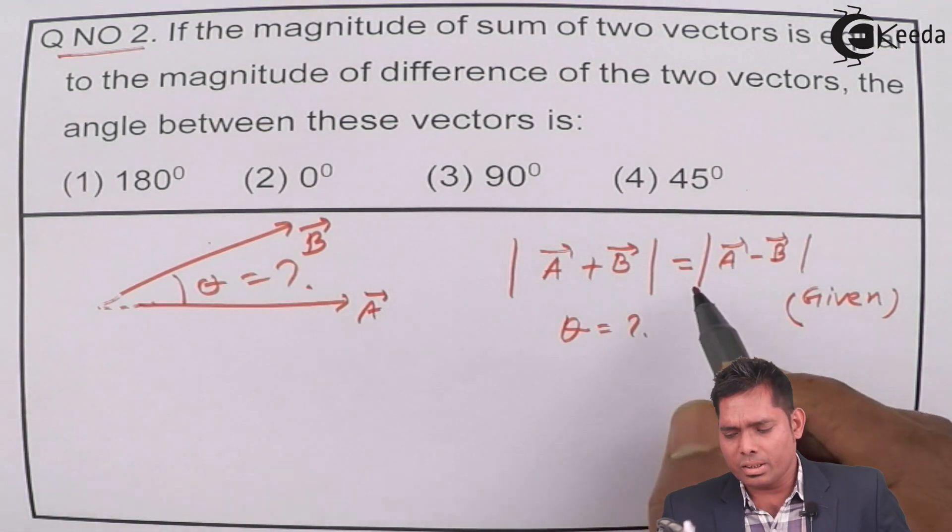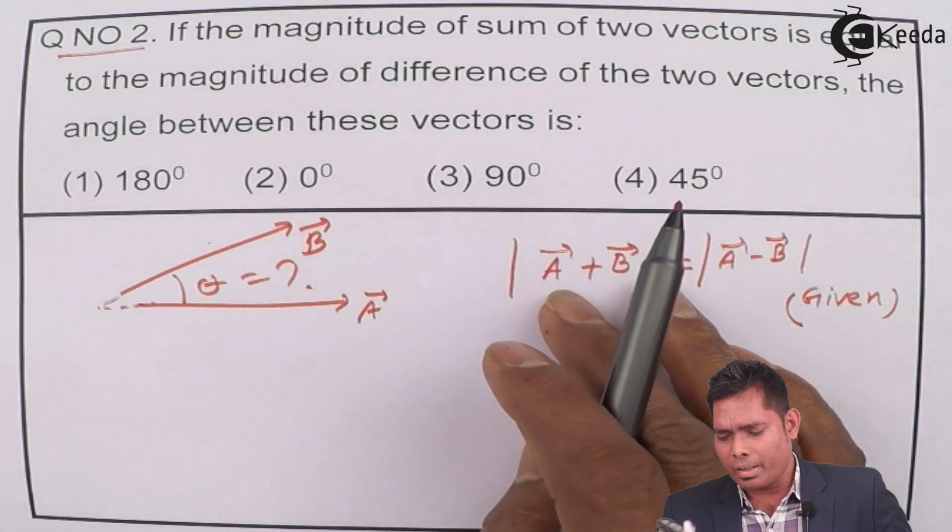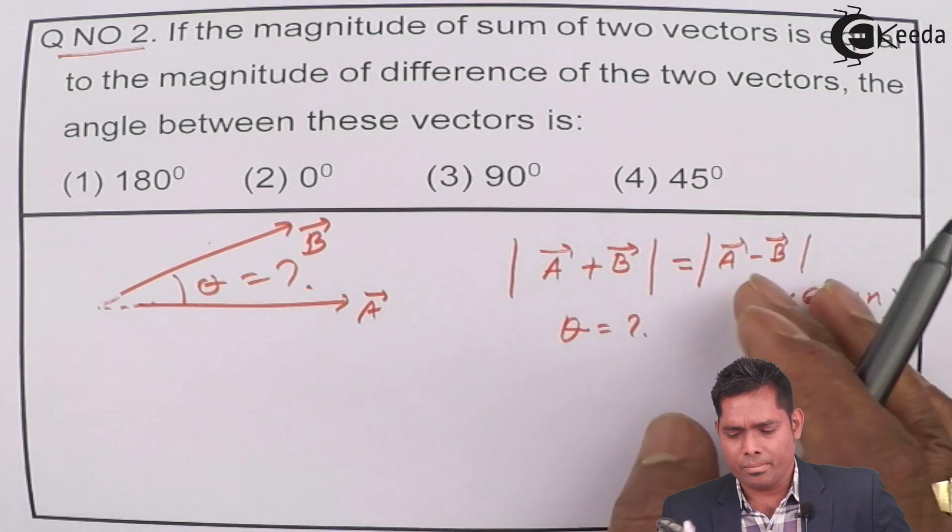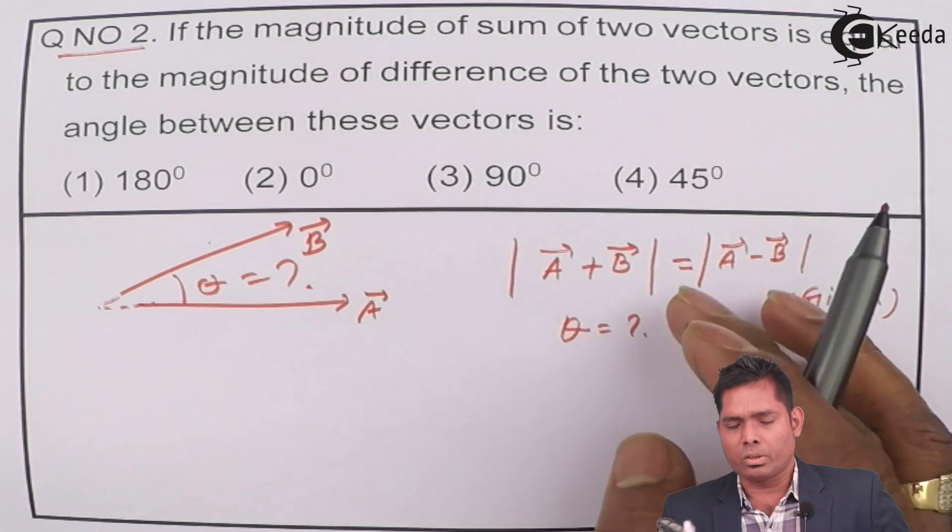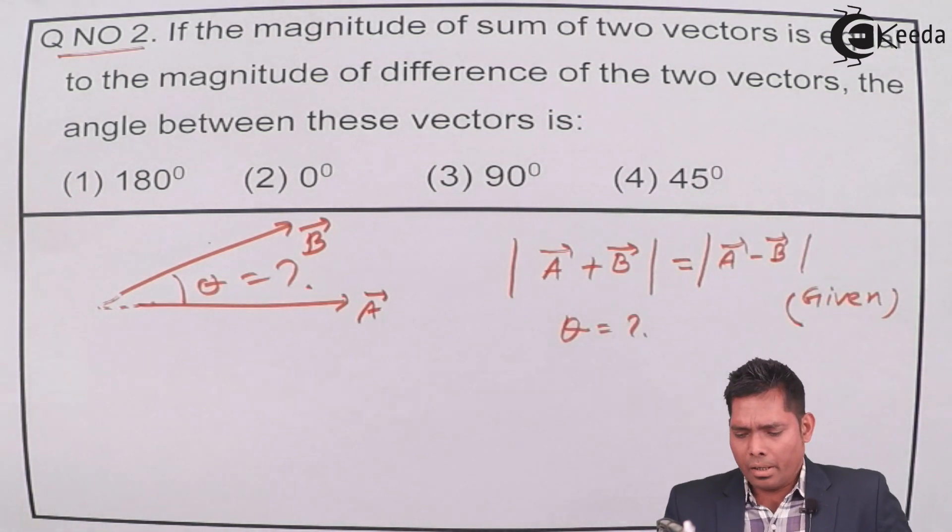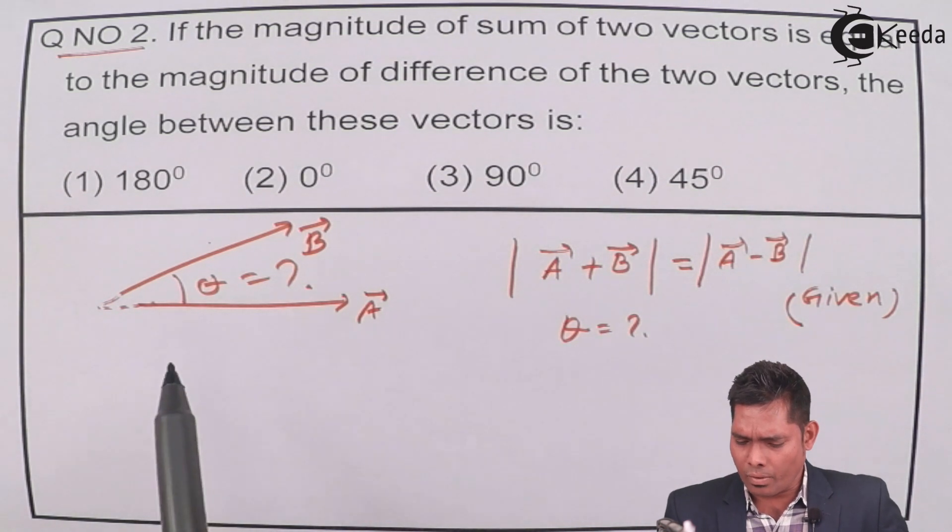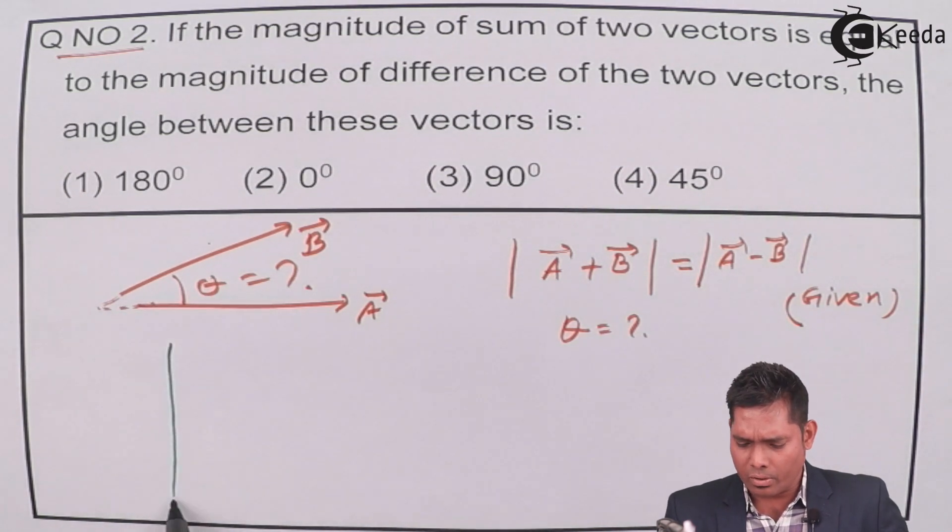So basically the question is that if |A + B| and |A - B| are same, what is the angle between the two vectors? If I think in general without mathematics, if I think of a general concept,